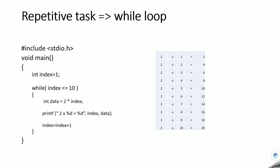Let's see another C program. In school we used to do multiplication tables like 2×1=2, 2×2=4, 2×3=6. A similar thing can be done with this program. We want to print the 2-times table from 1 to 10. Initially index = 1, and the while condition is 'index <= 10'.